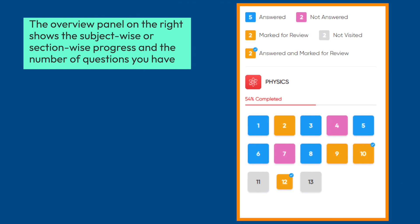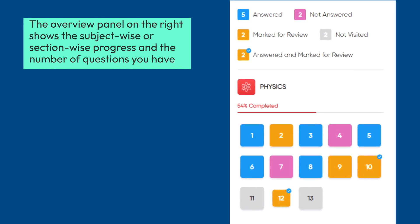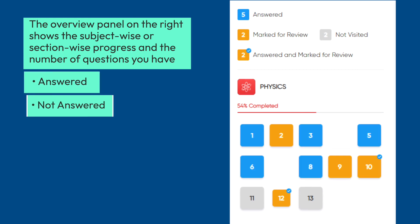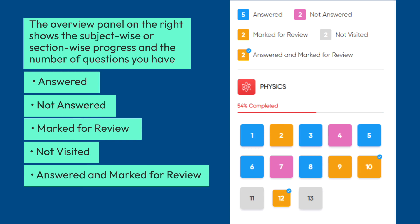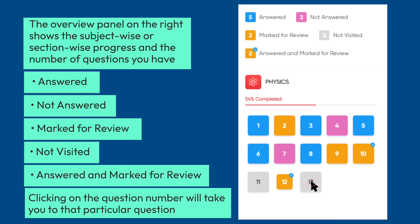The overview panel on the right shows the subject-wise or section-wise progress and the number of questions you have answered, not answered, marked for review, not visited, and answered and marked for review. Clicking on the question number will take you to that particular question.